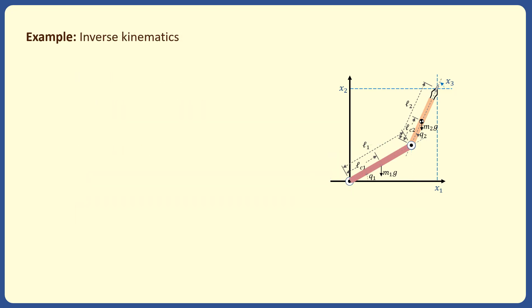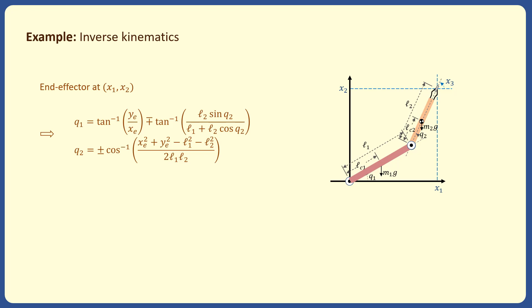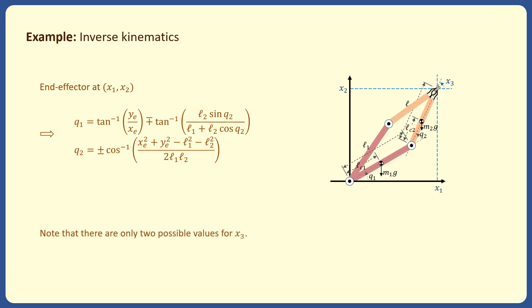We now go to the inverse kinematics problem. We have the end effector position and want to find the joint angles. Since this is a two degree of freedom robot, the end effector cannot be at any desired angle, so we only assume that the position of the end effector is given. Even for this simple example, finding the analytic solution is not very easy. The angles q1 and q2 are in this form. Note that there are two solutions for this inverse kinematics problem, which are shown in this figure, and there are only two possible values for the angle x3. We see in this example that the end effector cannot go to any desired position or orientation in 2D using just two joints; we need at least three joints to move the end effector to a desired position and orientation.